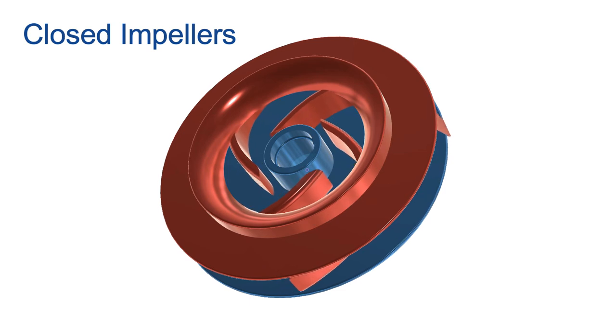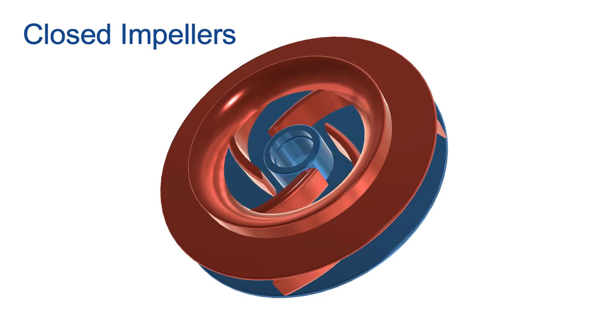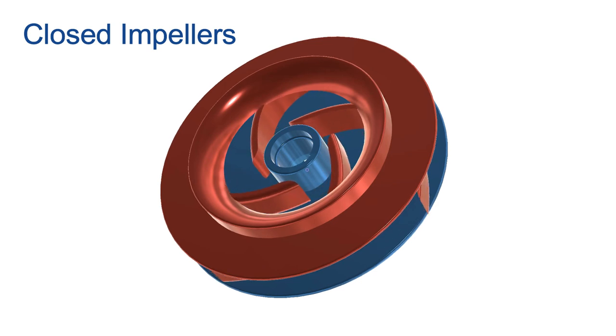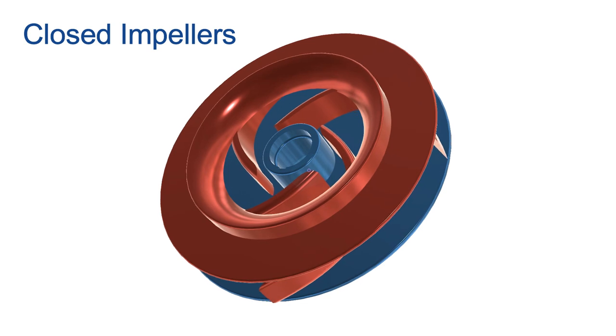Closed impellers have vanes that are sandwiched between two solid circular plates. The liquid travels through the channels between the impeller vanes and between the plates. This design creates the most efficient flow from the eye to the discharge port.